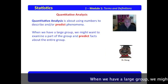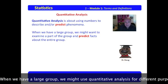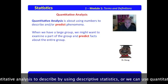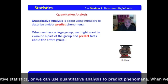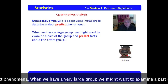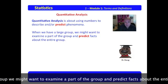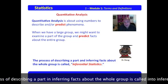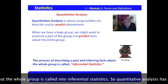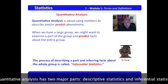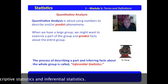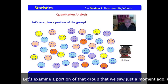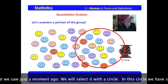When we have a large group, we might use quantitative analysis for a different purpose. We can use it to describe by using descriptive statistics, or we can use it to predict phenomena. When we have a very large group, we might want to examine a part of the group and predict facts about the entire group. We'll select a portion with a circle.